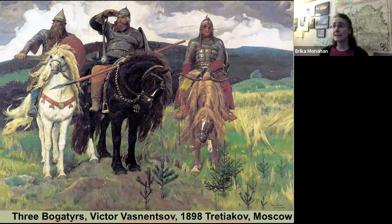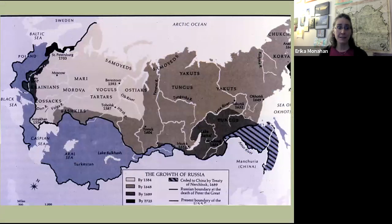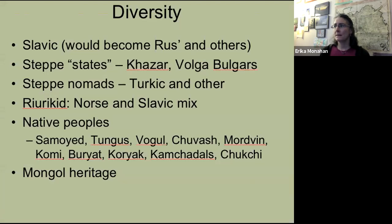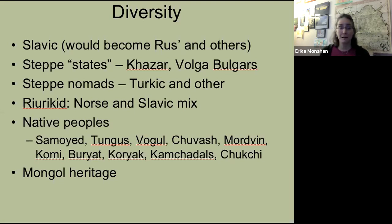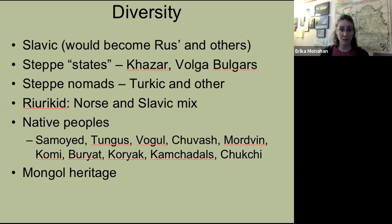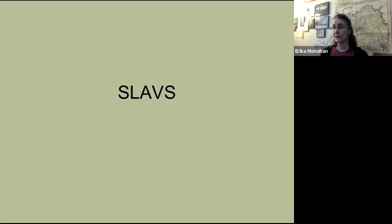Last time I talked about various neighbors and we touched on the diversity of these lands that became the Russian empire — steppe peoples like the Khazars, the Bulgars, the Turkics. There are also many indigenous peoples: Samoyed, Tungus, Vogel, Chuvash, Mordvin, Komi, Burjat, Koryak, Kamchatals, Chukchi, Saha, Yakutia, Finno-Ugric peoples. We haven't even started talking about Slavs, the Norse and the Rurikid dynasty, or the Mongol heritage.